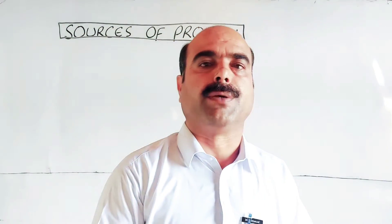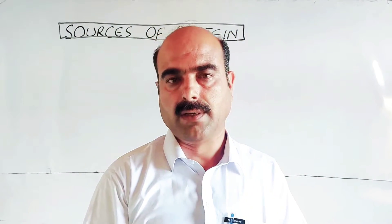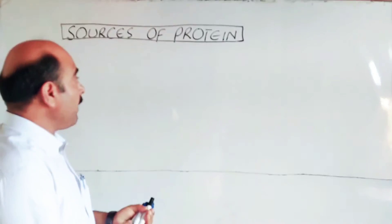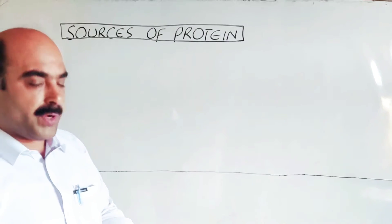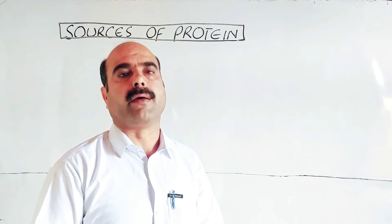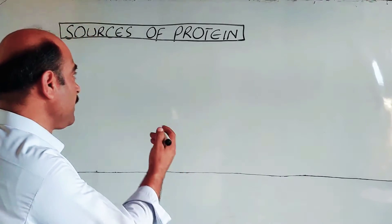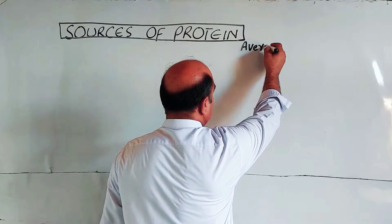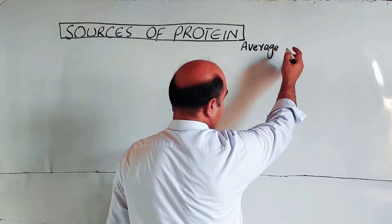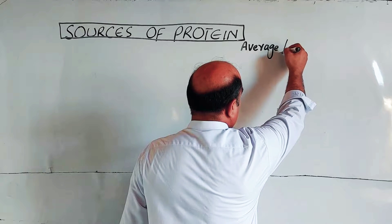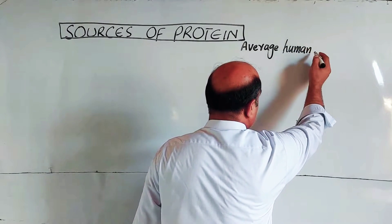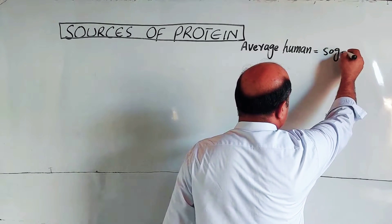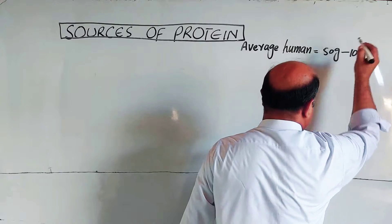This is Class 10, Chapter 5, Biochemistry. The topic is main sources of protein. On average, a human adult requires approximately 50 grams to 100 grams of protein per day.